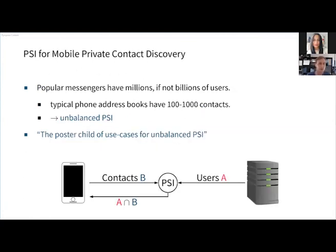We can also base all of these different protocols on different cryptographic building blocks: generic multi-party computation, public key cryptography, and oblivious transfer are some of the most popular choices. If we look at private set intersection for mobile contact discovery, popular messaging services have millions if not billions of users, while a typical phone address book has around 100 to 1000 contacts. This is a prime example of unbalanced PSI — some have called mobile contact discovery the poster child of use cases for unbalanced PSI.